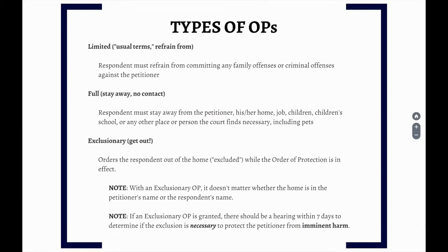There are different types of orders of protection that the family court issues. Under a limited OP, the respondent must refrain from committing any family offense or criminal offense against the petitioner. Essentially, it allows the respondent to be around the petitioner, contact the petitioner, even live with the petitioner, but orders that the respondent be on their best behavior. Under a full stay-away OP, the respondent must stay away from the petitioner and any place the petitioner is likely to be, such as their home, place of work, or their children's school. A full OP may also include a no-contact provision, meaning the respondent cannot contact the petitioner by calling, texting, or using social media, although the court can allow for exceptions — for example, allowing contact only in writing and only about the care of shared children.